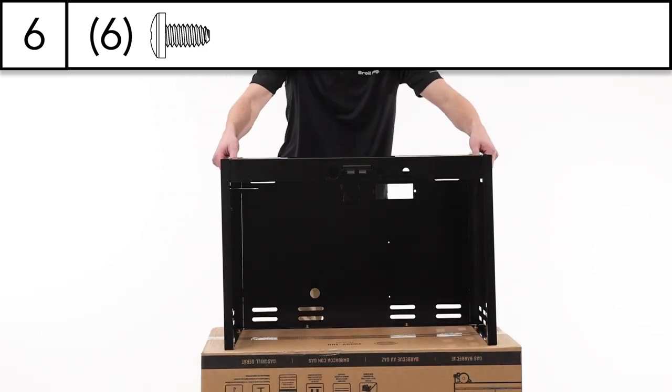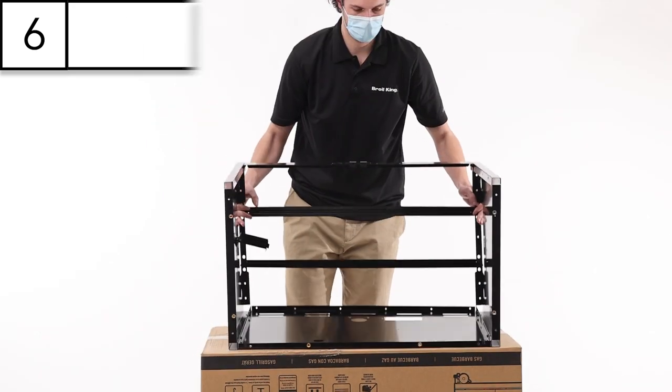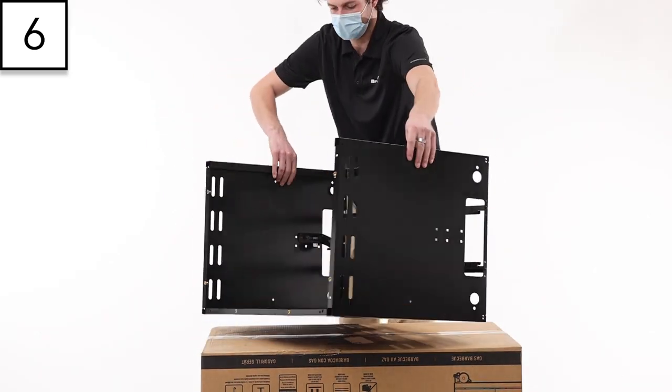Step 6: Lay the cabinet assembly on its back and bring the cook box assembly in line with the cabinet.